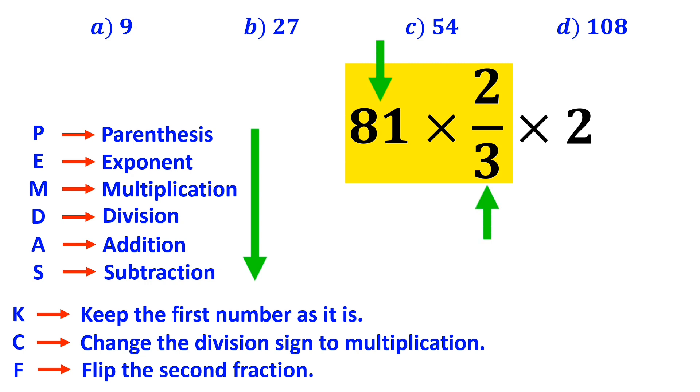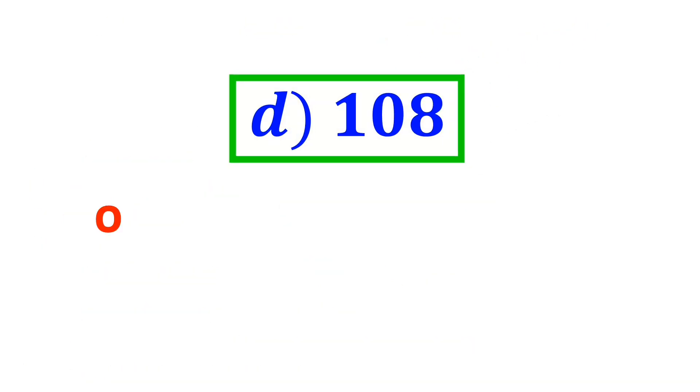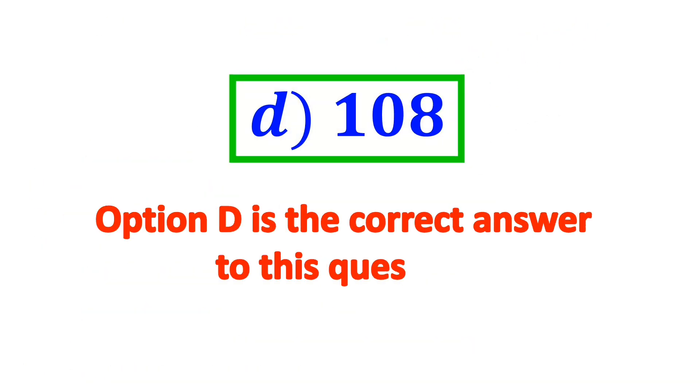Now, we can easily simplify the number 81 with the 3 in the denominator, and instead of this expression, we can write 54 multiplied by 2, which finally gives us the answer 108. Therefore, option D is the correct answer to this question.